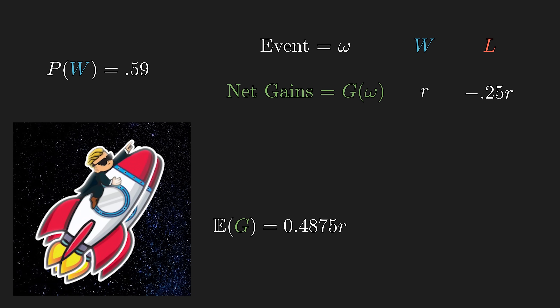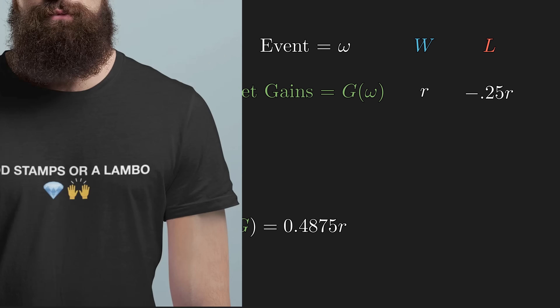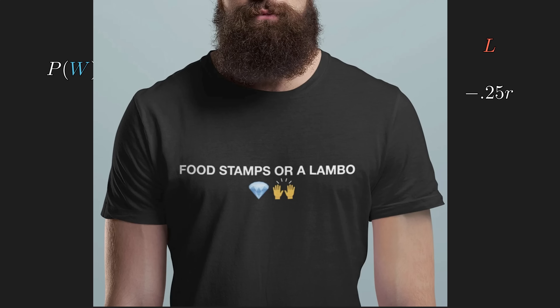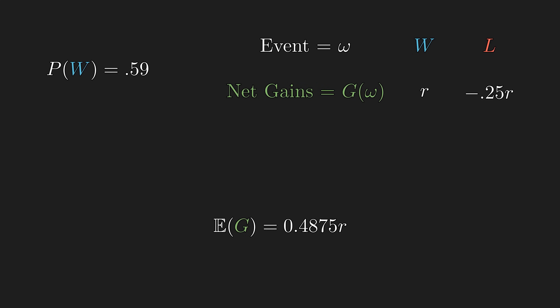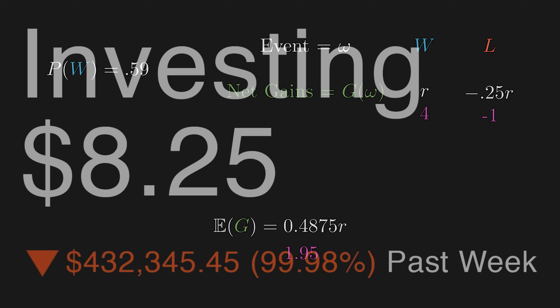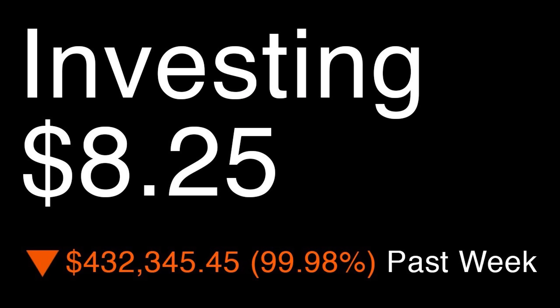One strategy commonly used by WallStreetBets members is called 'food stamps or Lambo' — risking everything to maximize potential profit. By maximizing the value of R, you take 4x leverage and risk everything you own. Naively this maximizes expected average profit, but if you continue to all-in each play you will eventually lose everything. The very act of maximizing expected payout actually leads to ruin, so there must be a better long-term strategy.